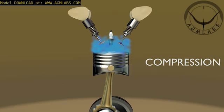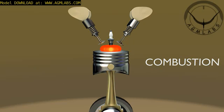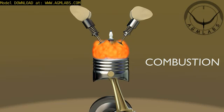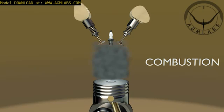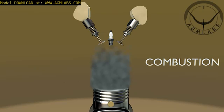Just before the piston reaches the top of its compression stroke, a spark plug emits a spark to combust the fuel-air mixture. Third, combustion stroke: the piston is now forced down by the pressure wave of the combustion of the fuel-air mixture. The engine's power is derived from this cycle.